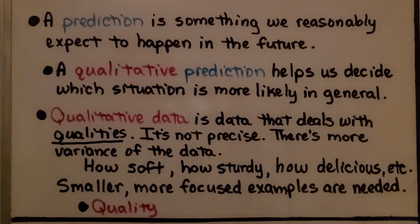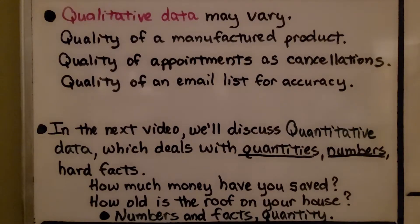Examples of qualitative characteristics include how soft, how sturdy, how delicious, and so on — smaller, more focused examples are needed. It's based on quality. Qualitative data may vary, such as the quality of a manufactured product, the quality of appointments versus cancellations, or the quality of an email list for accuracy.